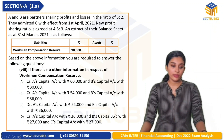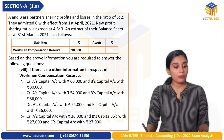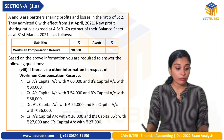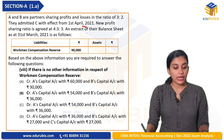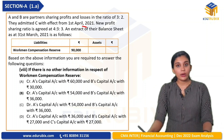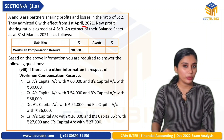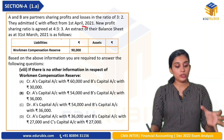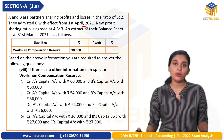Next MCQ question: A and B are partners sharing profit and loss in the ratio of 3 to 2. They admit C with effect from 1st April 2021. The new profit ratio is agreed at 4:3:3. An extract of the balance sheet as at 31st March 2021 is given. A and B, two partners, share profit and loss in the ratio of 3:2. In that ratio, they admit C, and the new profit sharing ratio is 4:3:3. The workman compensation reserve is on the liability side of the balance sheet.